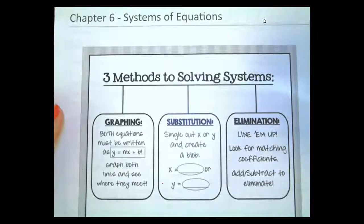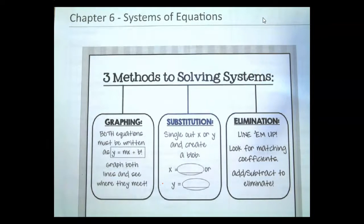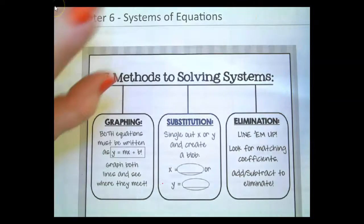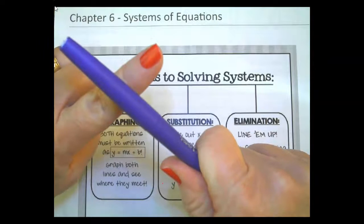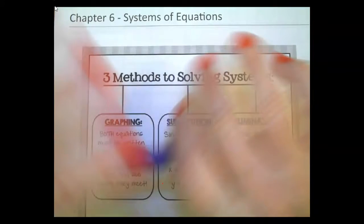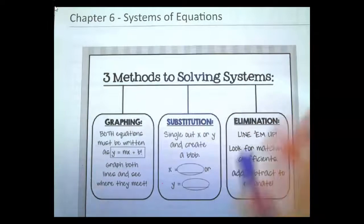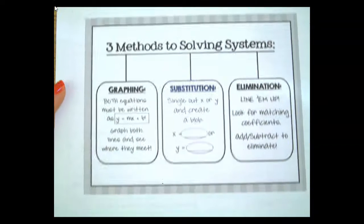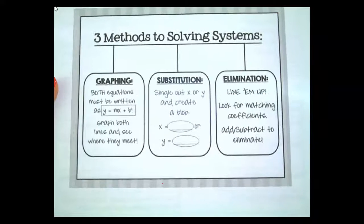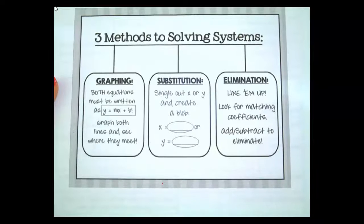So we're starting on chapter 6 which has to do with systems of equations. So what does that mean? It means that you have two equations and you're trying to determine if they share a solution or they share all solutions or they share no solutions.